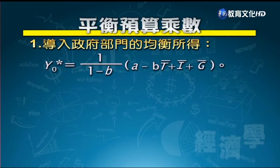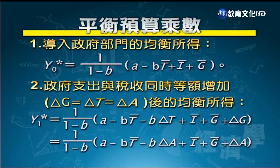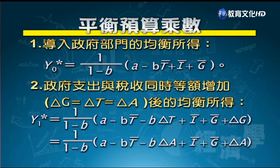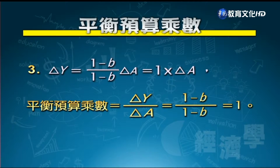將政府支出乘數與租稅乘數合併：政府支出增加1塊使所得增加 1/(1-B)，租稅增加1塊使所得減少 B/(1-B)。兩者相加：1/(1-B) + (-B/(1-B)) = (1-B)/(1-B) = 1。因此政府支出與定額稅同時等額增加1塊，所得恰好增加1塊，這就是平衡預算乘數 = 1。